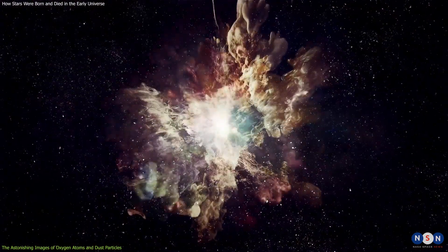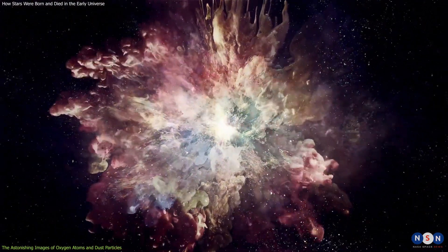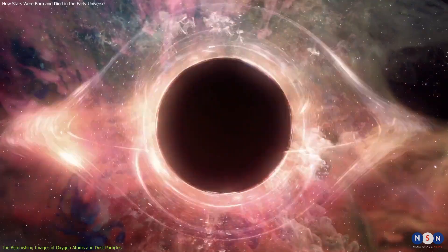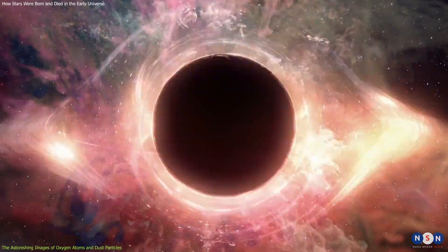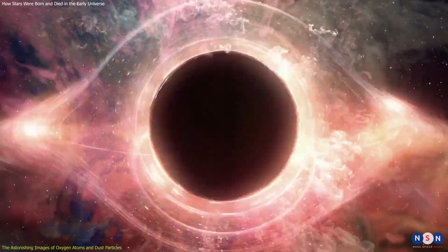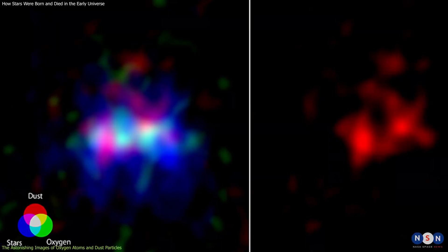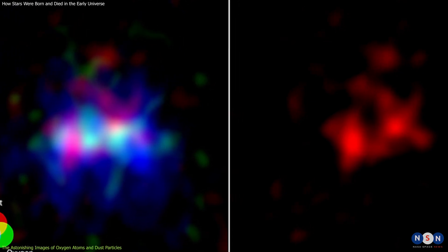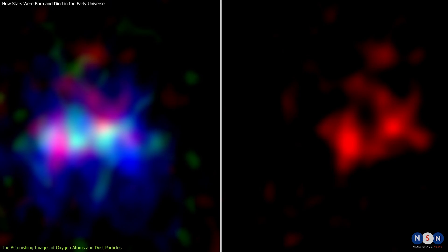It can create a shockwave that blows away the surrounding gas and dust, creating a bubble-like structure. It can also leave behind a dense core called a neutron star or a black hole, depending on its mass. The astronomers were able to create images of the nebula showing the distribution of oxygen atoms and dust particles, as well as the location of the superbubble.